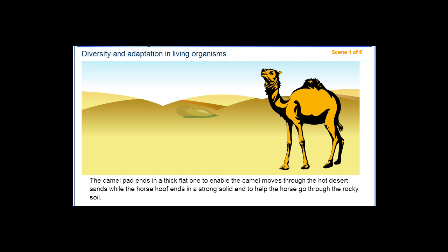The camel pad ends in a thick, flat surface to enable the camel to move through hot desert sands, while the horse hoof ends in a strong, solid form to help the horse go through rocky soil.